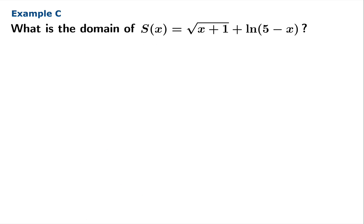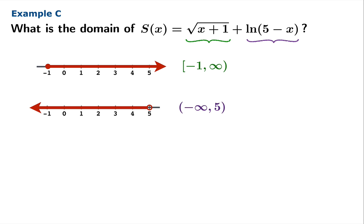We'll end with this example. What's the domain of s defined by this formula? You'll notice that this is precisely the sum of the two previous functions in examples A and B. We've already done some work. We know that the square root of x plus 1 has domain from negative 1 to infinity. We know that the domain of ln of 5 minus x is the set of numbers from negative infinity to 5. And to be in the domain of this sum function s, x needs to be in both of these sets.